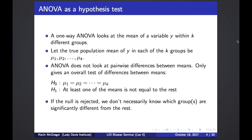Notation: we have our continuous variable y, and we're looking at its mean within k different groups. We define the parameters of interest as the true population means within each of the k groups, denoted mu1 through mu k. When we do an ANOVA, we're not investigating individual differences between each mean — we're doing what we call an omnibus test, an overall test of differences. Our null hypothesis is simply that all means are equal: mu1 equals mu2 all the way through mu k.